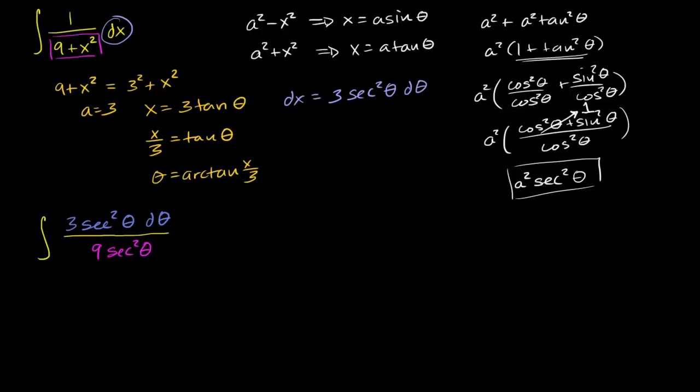Lucky for us, the secant squareds cancel out. You have 3 over 9. This whole thing can be rewritten as 1 third times the indefinite integral of d theta, which equals 1 third theta plus c.